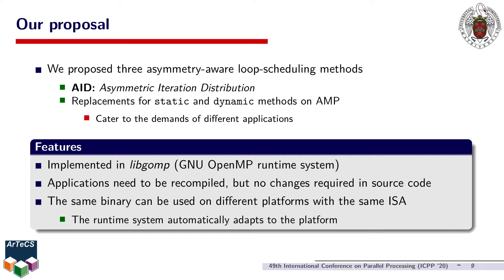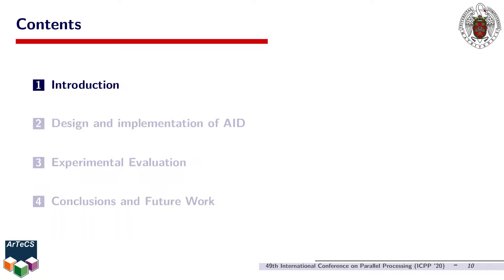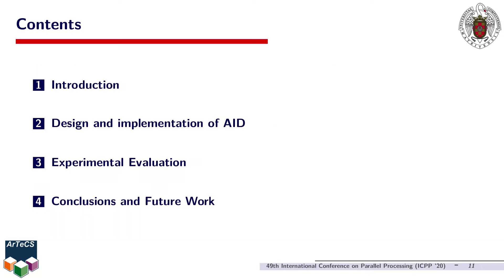To use AID, however, applications must be recompiled, but the resulting binary may be used on different platforms with the same ISA. Our modified version of the runtime system automatically adapts to the platform, whether symmetric or asymmetric. After this brief introduction, I will move on to describe the design and implementation of AID, and right before concluding, I will proceed to discuss our most relevant experimental results.